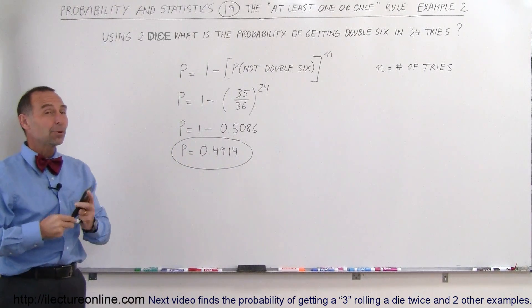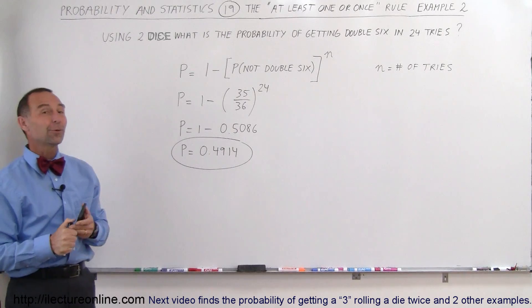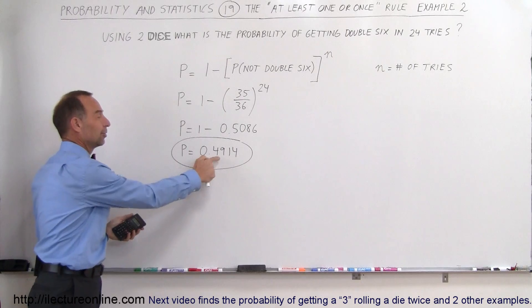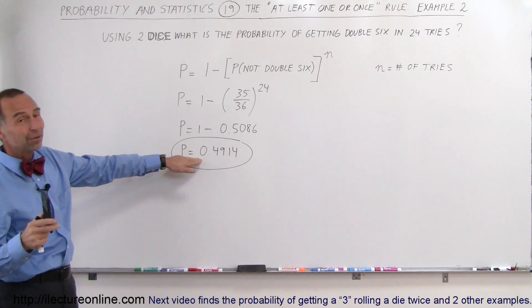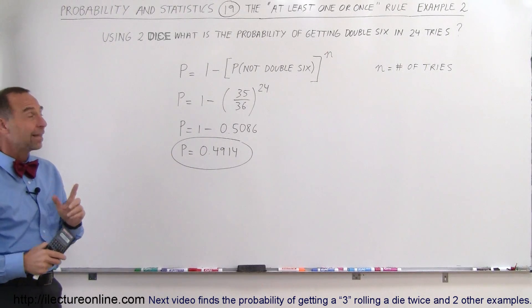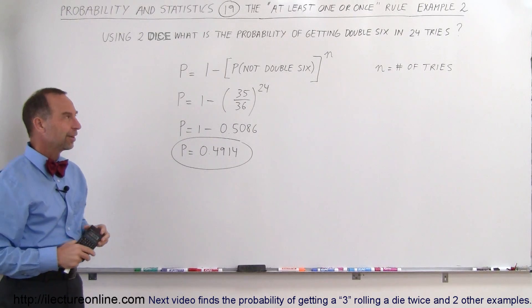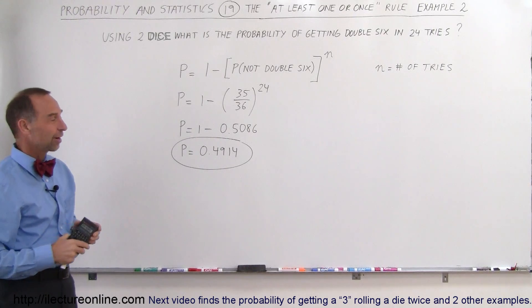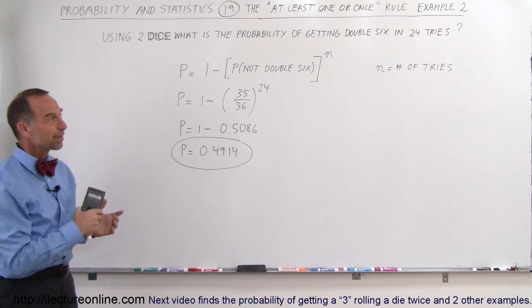It's less than 50%. So if you want to put a wager on this attempt to try and make some money, it's not going to work because, on average, you will lose most of the time. Not much of a difference, but over a lot of tries, you're going to end up losing money if you bet that you can throw double 6s in 24 tries. You probably need 25 or 26 tries to get a probability greater than 0.5. All right, that's how we do that.